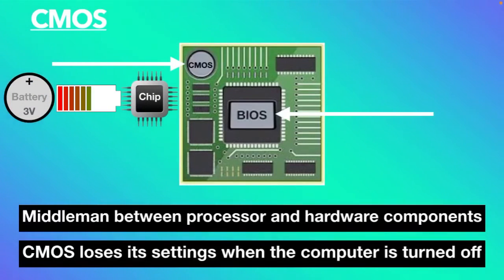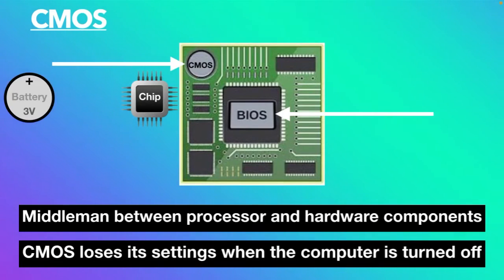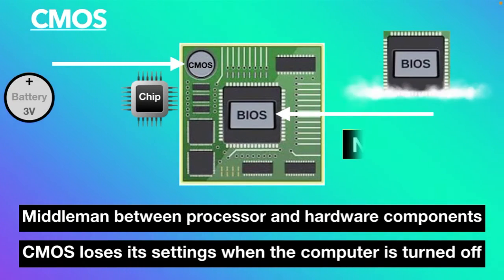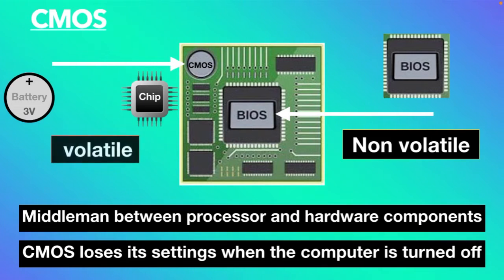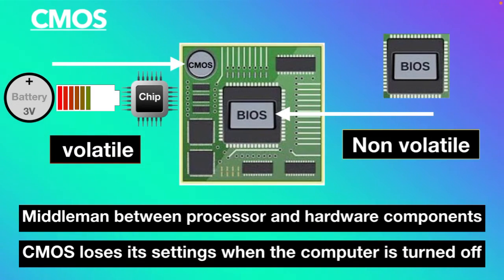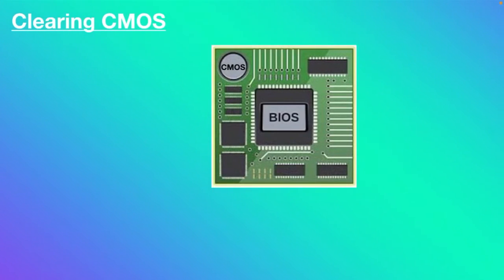However, the CMOS battery is used to provide a constant power supply to the CMOS chip to save the settings even after the computer is turned off. Remember, BIOS is non-volatile while CMOS is volatile — that means it needs constant power supply to maintain its settings.